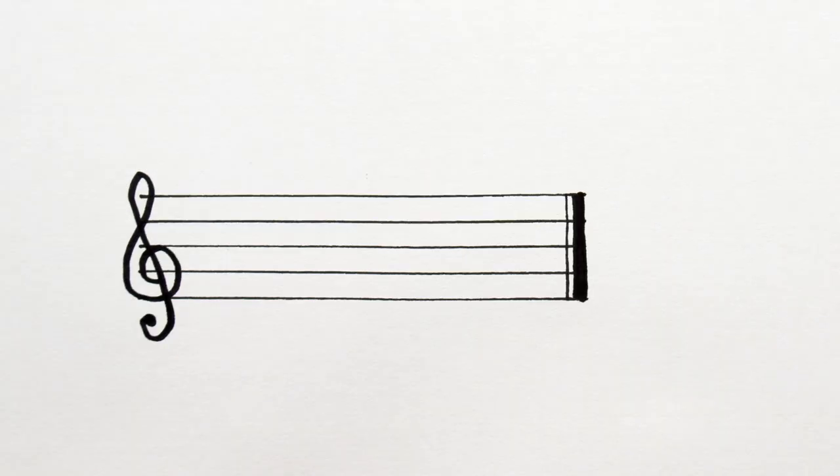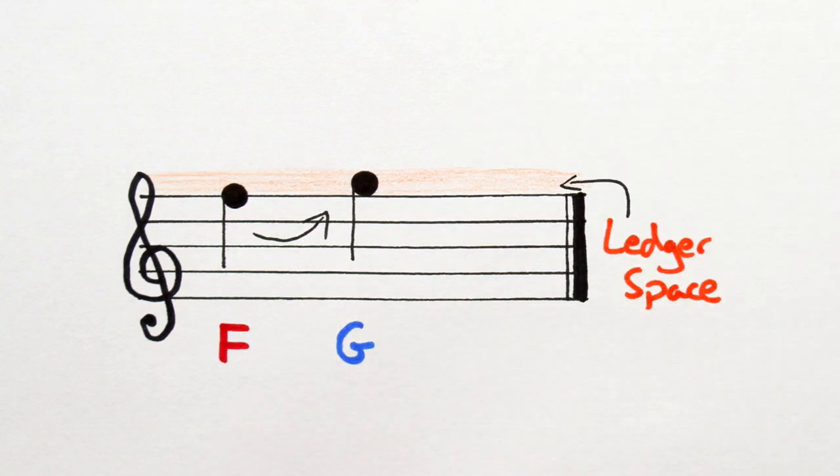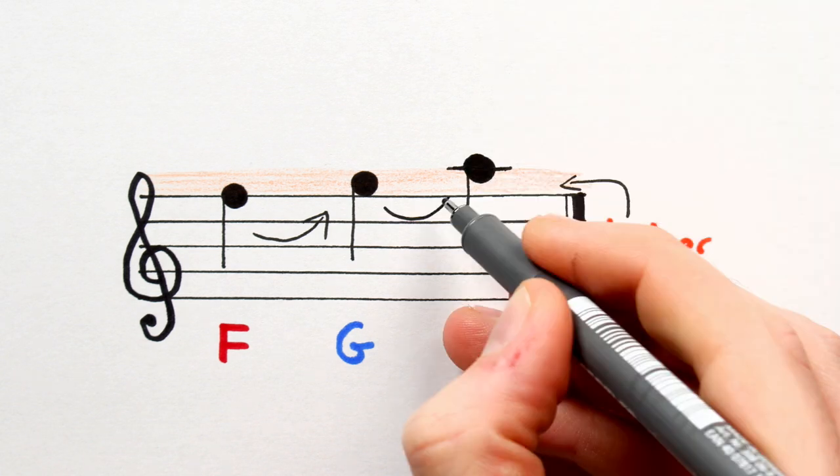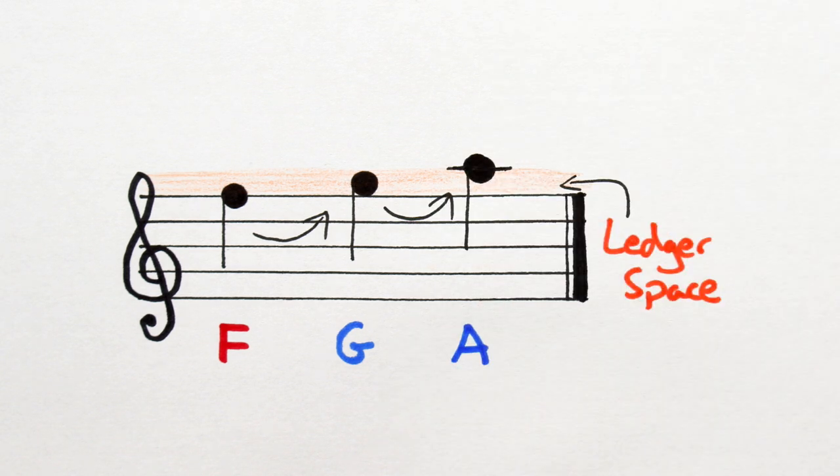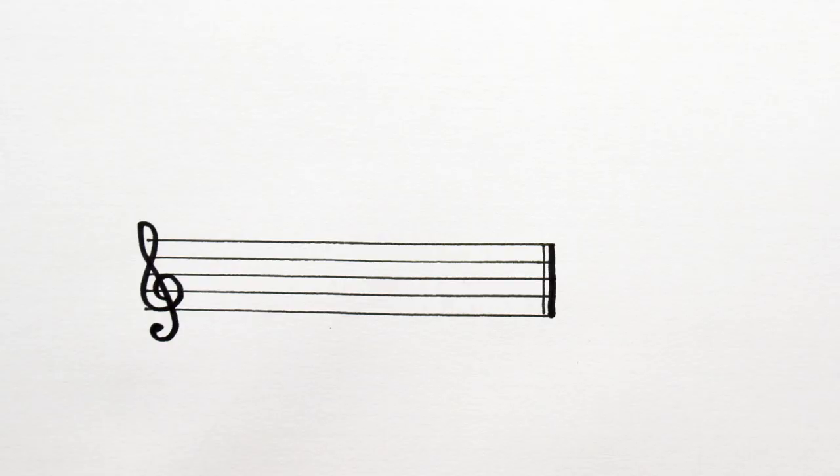Same goes at the top end. The note above F is called G and it goes in the first ledger space above the treble stave. Next note up is A and it goes on the first ledger line above the treble stave.